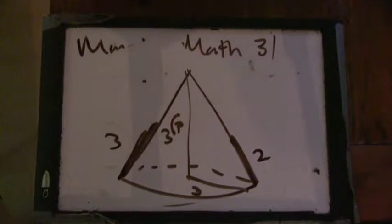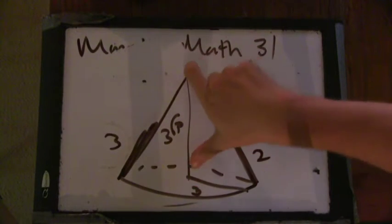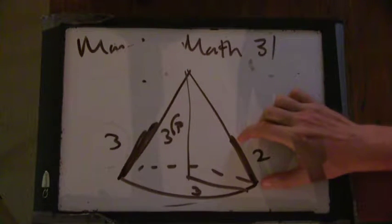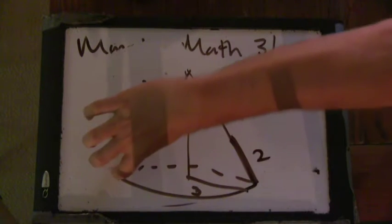Okay, so we got a cone. Radius 3, height 3 root 3. This distance here is 2. This distance here is 3.